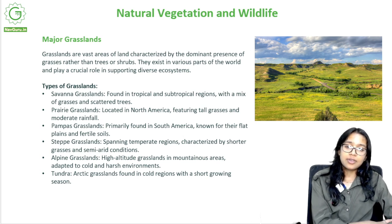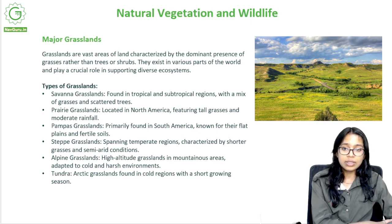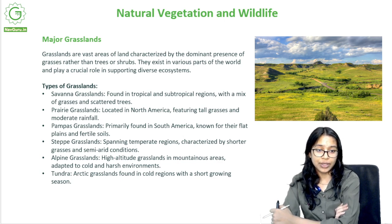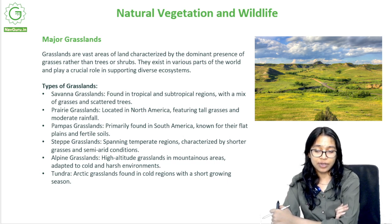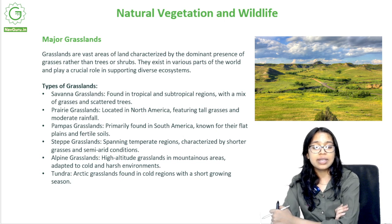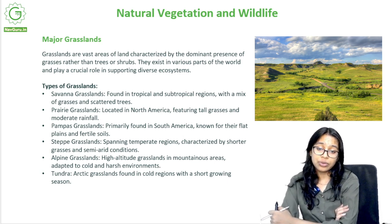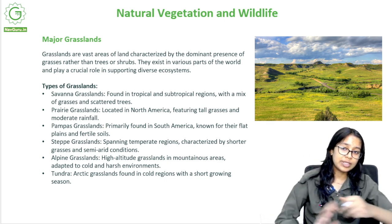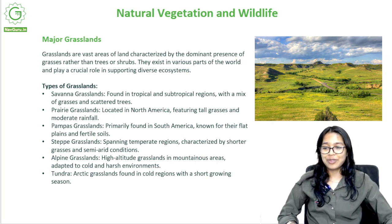Grasslands are vast areas of land characterized by the dominant presence of grasses rather than trees or shrubs. They play a critical role in supporting diverse ecosystems. Types of grasslands include: savannah grasslands in tropical and subtropical regions with a mix of grasses and scattered trees; prairie grasslands in North America with tall grasses and moderate rainfall; pampas grasslands in South America with flat plains and fertile soils; steppe grasslands in temperate regions with shorter grasses and semi-arid conditions; alpine grasslands in mountainous areas; and tundra, which are arctic grasslands in cold regions with a short growing season.